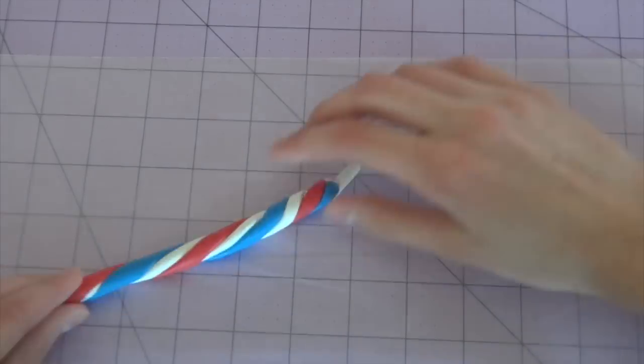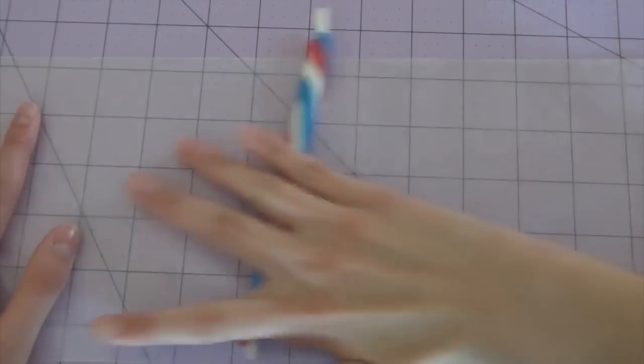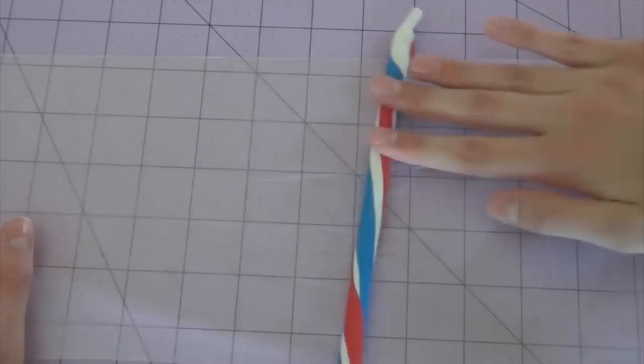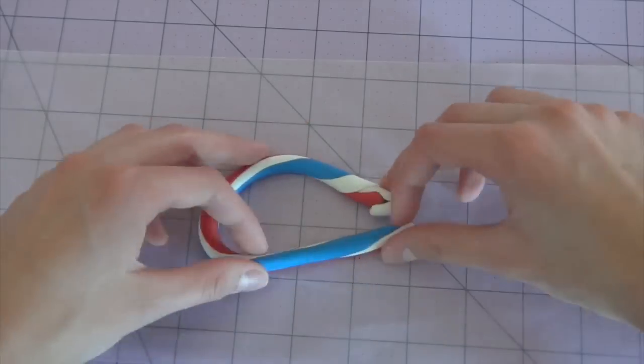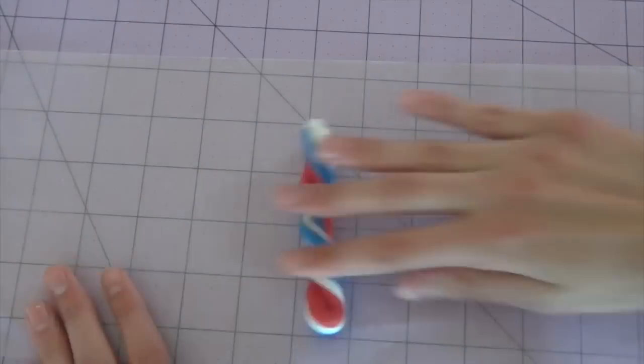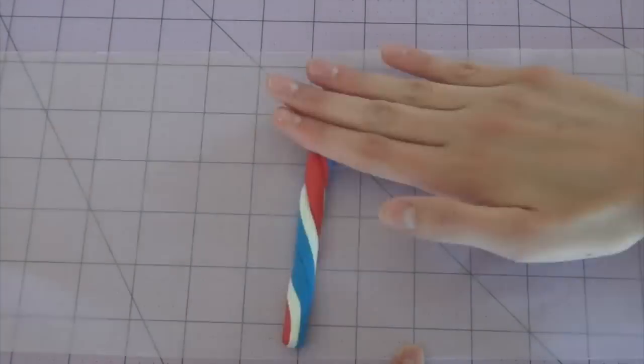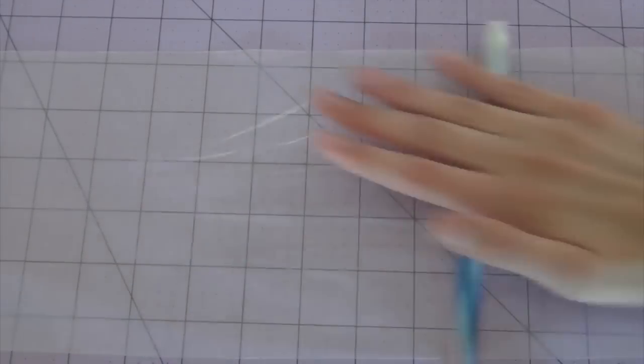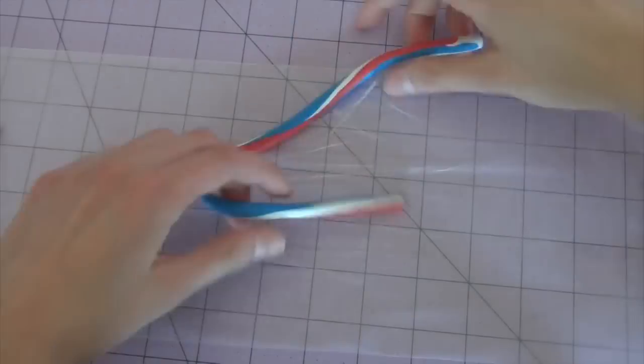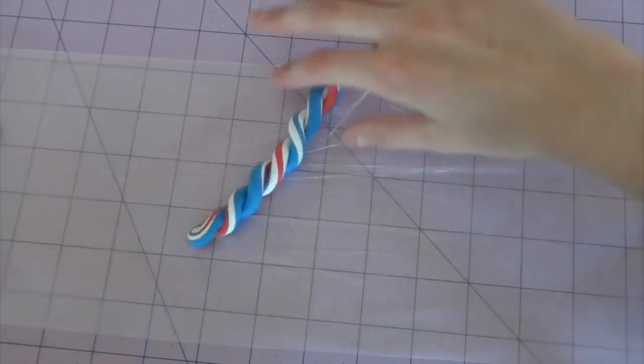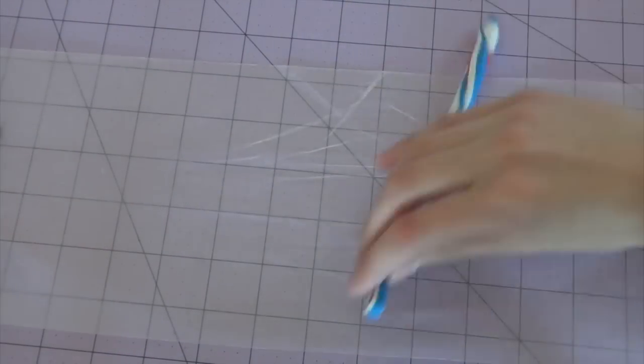Once you have all of your strands twisted around each other, you're going to roll them out like you did before so it just turns into a longer strand. Then you're going to take that strand and fold it in half and then twist it over each other, and then you're going to roll it out again. Once it's long, you're going to fold it and then twist it again, and you're going to keep repeating that two or three times.